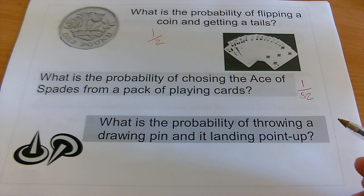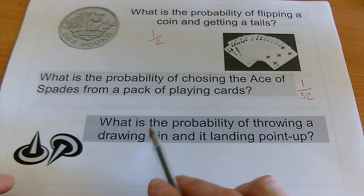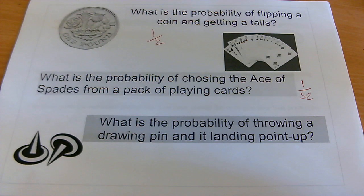But a drawing pin, well, it's not really designed to be predictable, it's designed to stick stuff on a wall. So it's much harder to answer the question, what is the probability of throwing a drawing pin and it landing point up? So we've got to do a different sort of thing if we're going to answer this question.